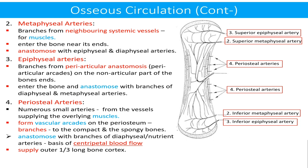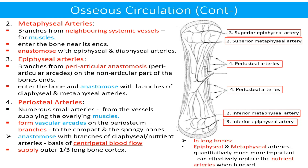The fourth set is periosteal arteries. A large number of small arteries from the vessels supplying the overlying muscles form a vascular network on the periosteum and give multiple branches to the compact and spongy bone. These branches anastomose with the branches of the nutrient artery, making the basis of centripetal blood flow. They supply the outer one-third of the long bone cortex. In long bones, epiphyseal and metaphyseal arteries are quantitatively much more important than the nutrient artery, as they can effectively replace the nutrient arteries when blocked.